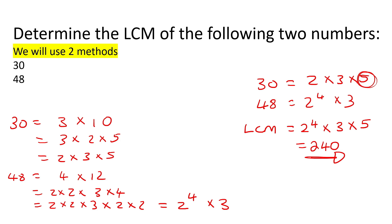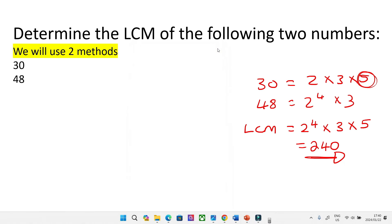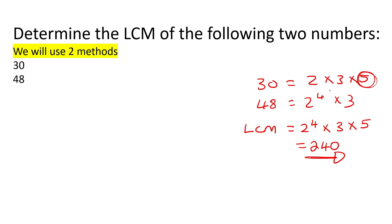We can quickly do the calculator method to confirm. Take 30 equals shift factors and you get 2 × 3 × 5, like we got over there. Then for 48, equals shift factors gives 2⁴ × 3, just like we got over there. From that you would then get to the same result, and then just follow the method from there.